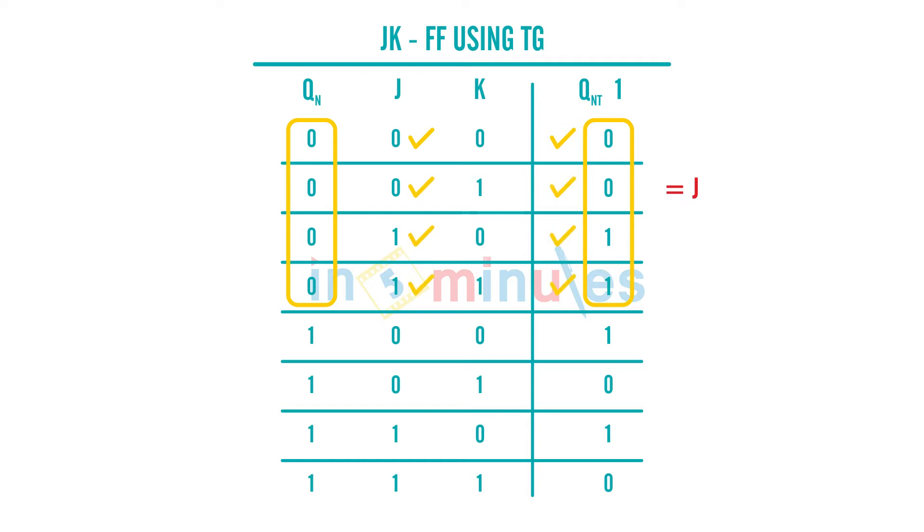On the other hand, when my input previous stage was 1, QN was 1, if you see my output is nothing but K bar.